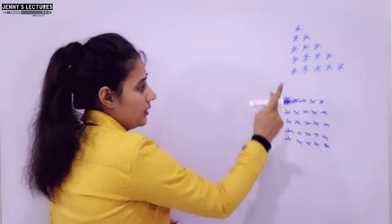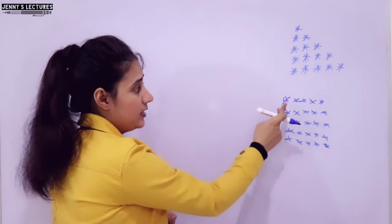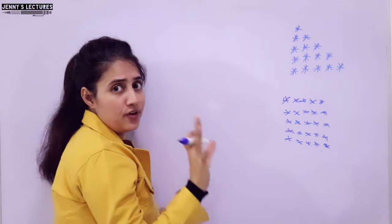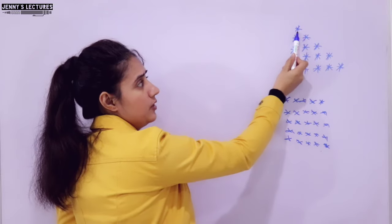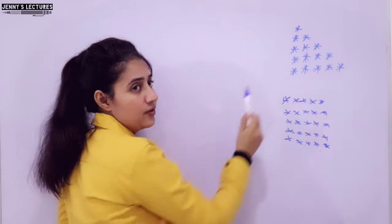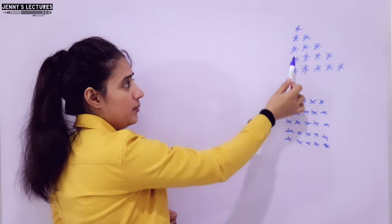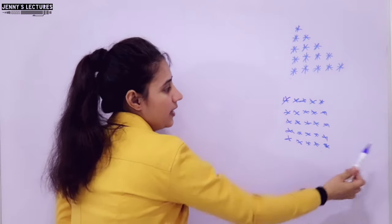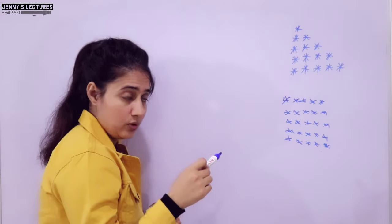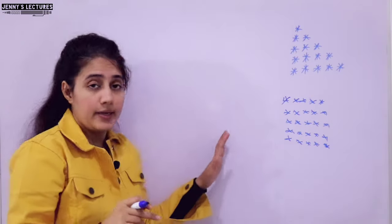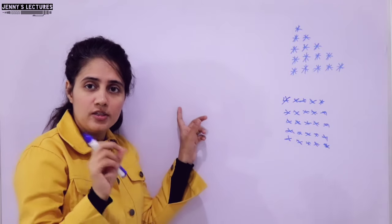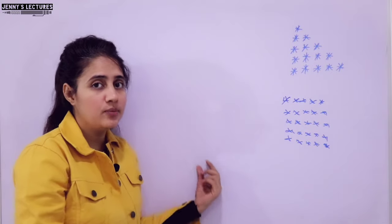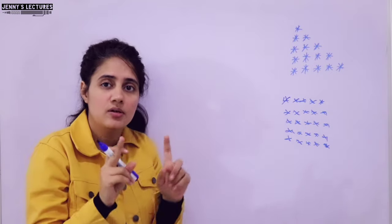Now, see here - I am printing 5 lines, but in the first line I am printing 1 star, then 2 stars, then 3, then 4, then 5. You can even print 10 lines with 6, 7, 8, 9, 10 stars. This kind of triangle pattern we are going to discuss. I will discuss only the logic on the board and then show you the output in VS Code.